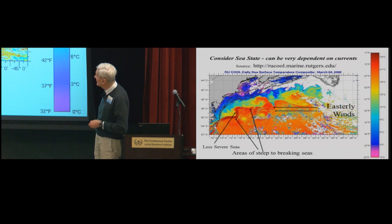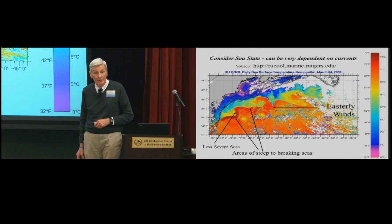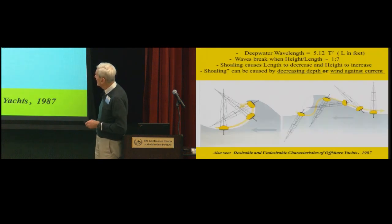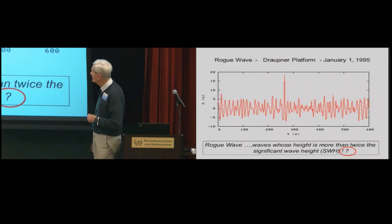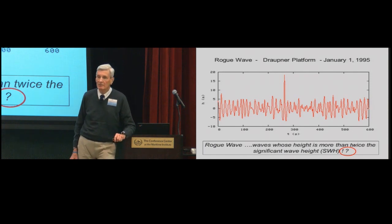The breaking condition is H over L is 1 over 7, where L is a simple function of period. You saw it before, 5.12 T squared. So I come out here, and I take a look at my plot. This is another sea surface temperature. And I stuck on some easterly winds, just for the hell of it. And I said, we can pick off these areas. It's going to be areas of steep to breaking seas, and over here, less severe. So depending on what you're trying to do, you can do your routing based on a knowledge of what wind against the current can do to you. That's what you don't want to have happen. And he actually did come back up. Some of you may have seen this. I don't have time to talk about this today, but we can talk about it at the round table.